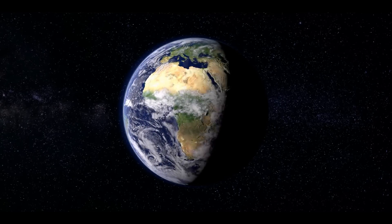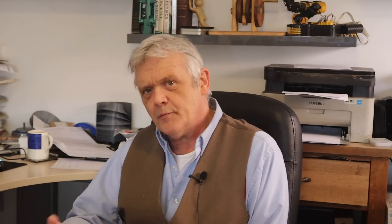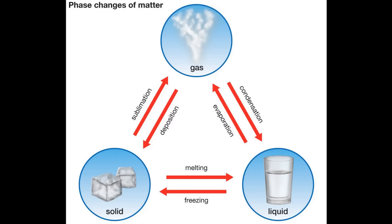We live in a physical world, so all materials exist in a physical state, and there are basically four of them, but the main ones we interact with are solid, liquid, and gas. There is also a plasma, but solid, liquid, and gas are the main phases of a material that we'll encounter.